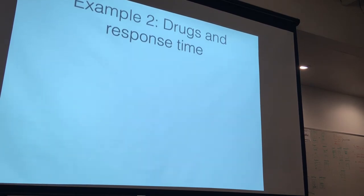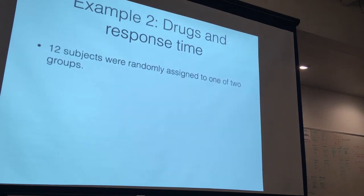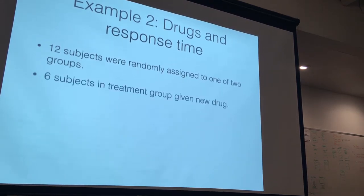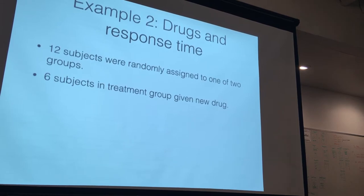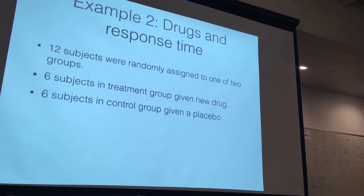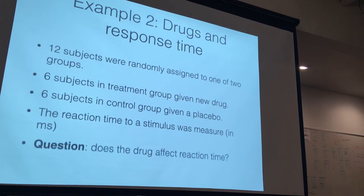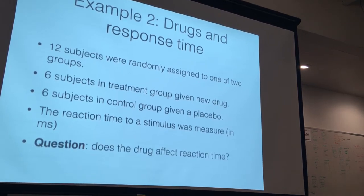The second example dataset is about drugs and response times. There are only 12 observations. We have 12 subjects randomly assigned to one of two groups: a treatment group given a new drug, and a control group given a placebo. The response being measured was reaction time to some stimulus, measured in milliseconds. The question is: does the drug versus placebo affect reaction time?